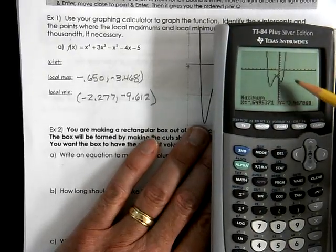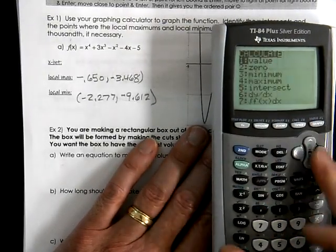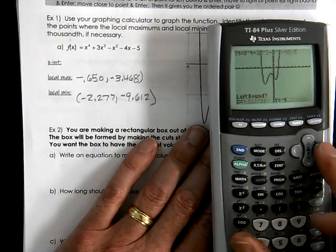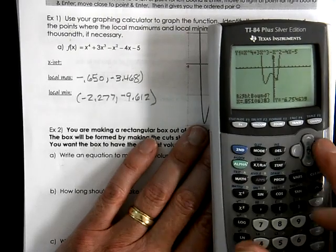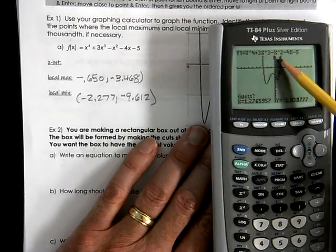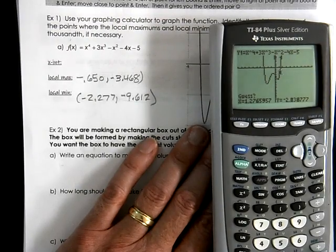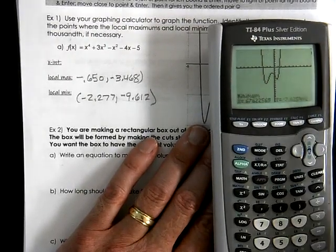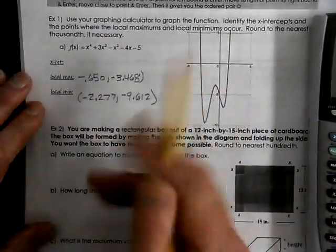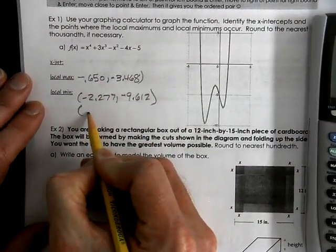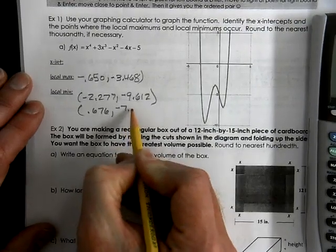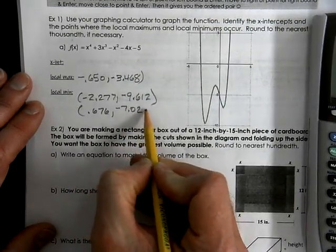Now I have another one to find. A local minimum. Second trace. Minimum. Left bound. Enter. Right bound. Be sure I'm to the right of it. Enter. I've narrowed my window down. It's really the domain. And I'm only looking for answers in between those two which is here it is. Point six seven six and negative seven point zero two five.